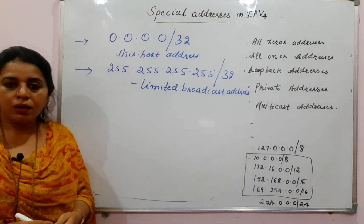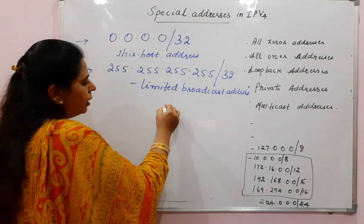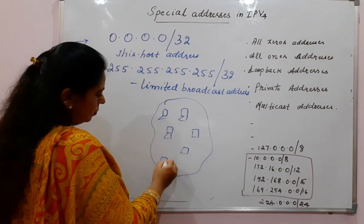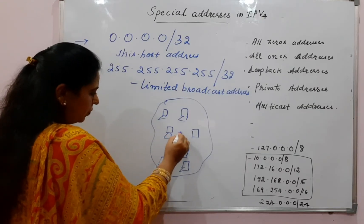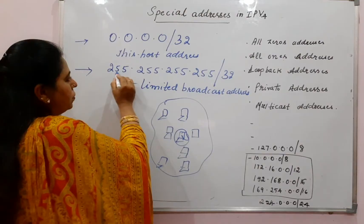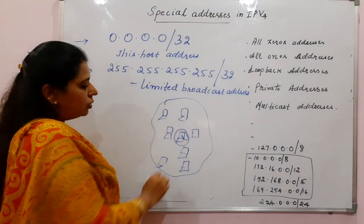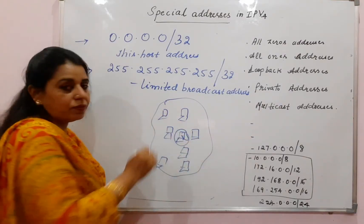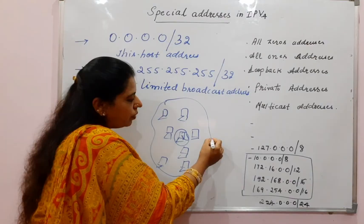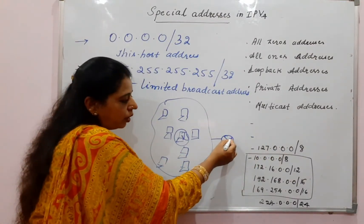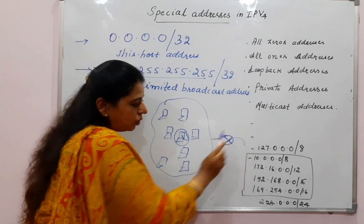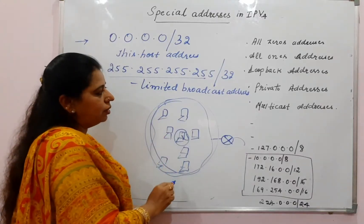Consider a network scenario: one network has a number of hosts. If one particular host wants to send a message to all other hosts in the network, it uses 255.255.255.255 as the destination address, so all hosts in that network receive the message. It is called 'limited' broadcast because when this network is connected to another network via a router, the router ensures that the message does not cross into the other network — it remains limited to this network.